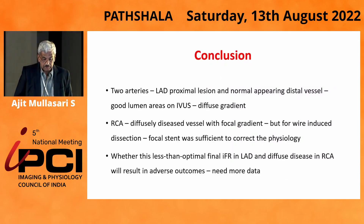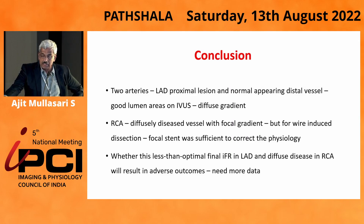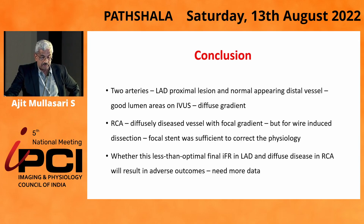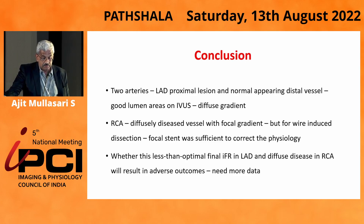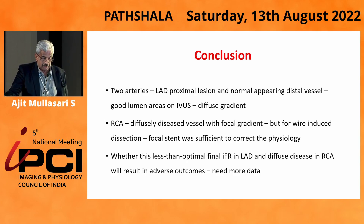So the issue now involves two questions for discussion. The LAD proximal lesion, which was the culprit, was fixed and looked very good after stenting, with good lumen areas on IVUS. There was a diffuse gradient, but it was entirely in the area of the muscle bridge, so going up on the stent would not help. In the RCA, it was a diffuse diseased vessel with a focal gradient. We thought one distal stent would finish it, but there was a wire-induced dissection that created a functional problem, and a focal stent was required to correct the physiology.